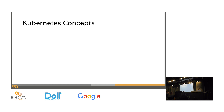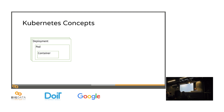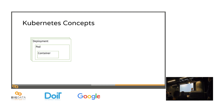Kubernetes is a container orchestration platform. You can take containers — your application, your services — and run them on Kubernetes. The whole point of Kubernetes is to give you a good way of running that in a scalable, fault-tolerant way. In the end, Kubernetes is just a set of containers running in some way that you define.